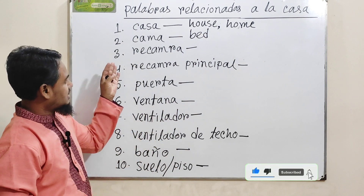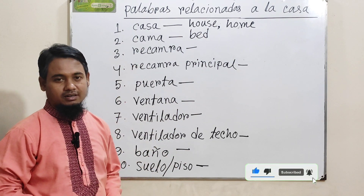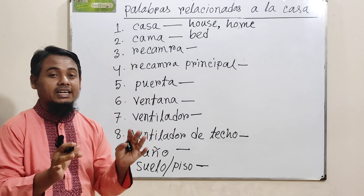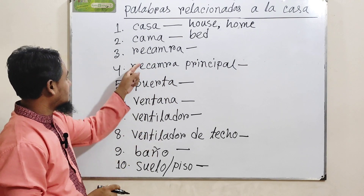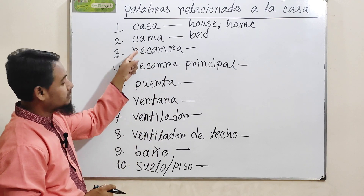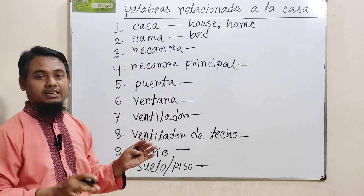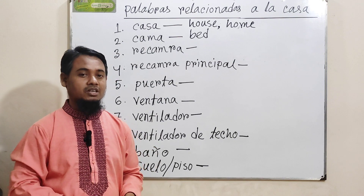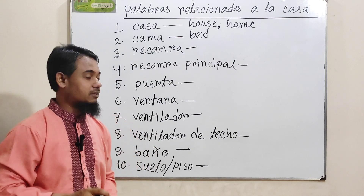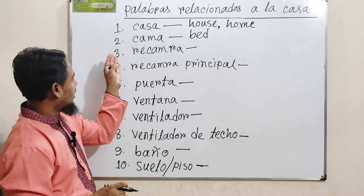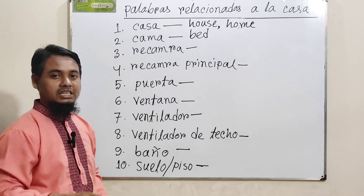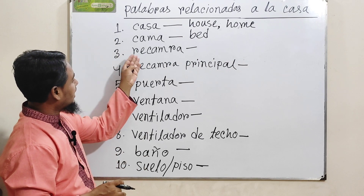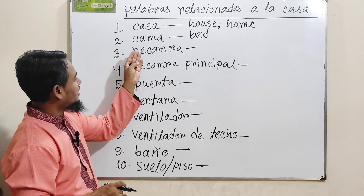Número tres: 'recámara'. It is pronounced 'recámara', not 'recamara', because this letter 'a' is always pronounced 'a', not 'e'. So it is 'recámara'. If I spell this word it will be: R-E-C-A-M-A-R-A.